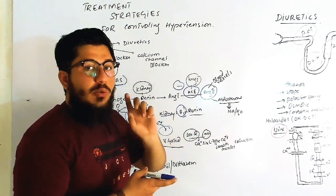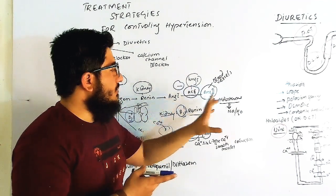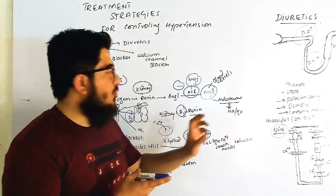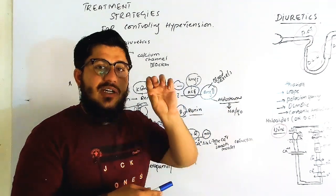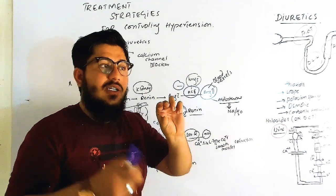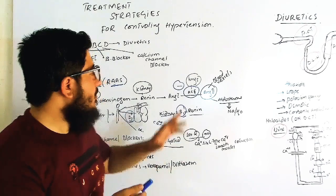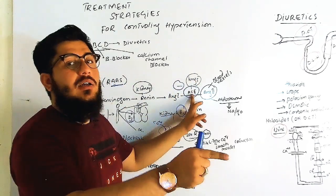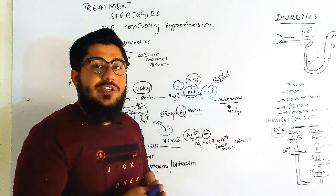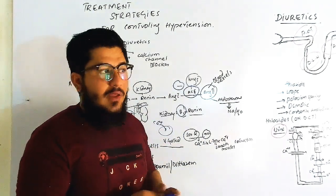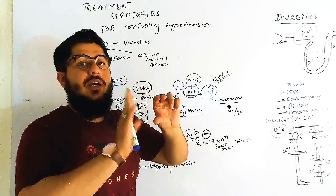Angiotensin-2 has two important functions: it stimulates aldosterone release and constricts blood vessels. Aldosterone causes sodium and water reabsorption, increasing blood volume. Constriction decreases the diameter of blood vessels. High volume and constriction mean high blood pressure. ACE inhibitors block the angiotensin-converting enzyme, so angiotensin-2 is not formed, blood vessels dilate, and sodium and water reabsorption decreases, lowering blood pressure.